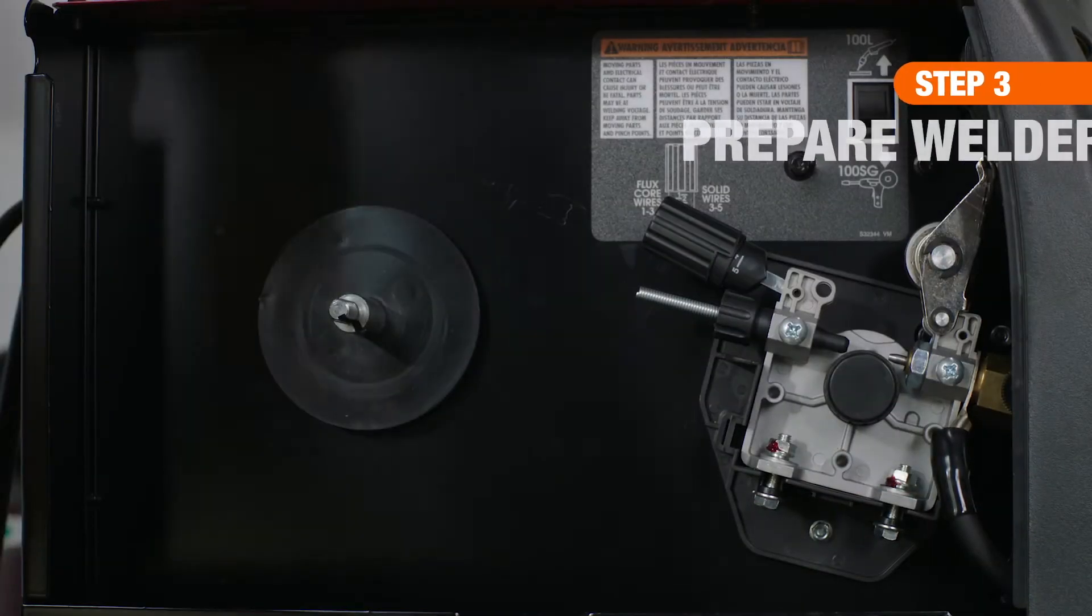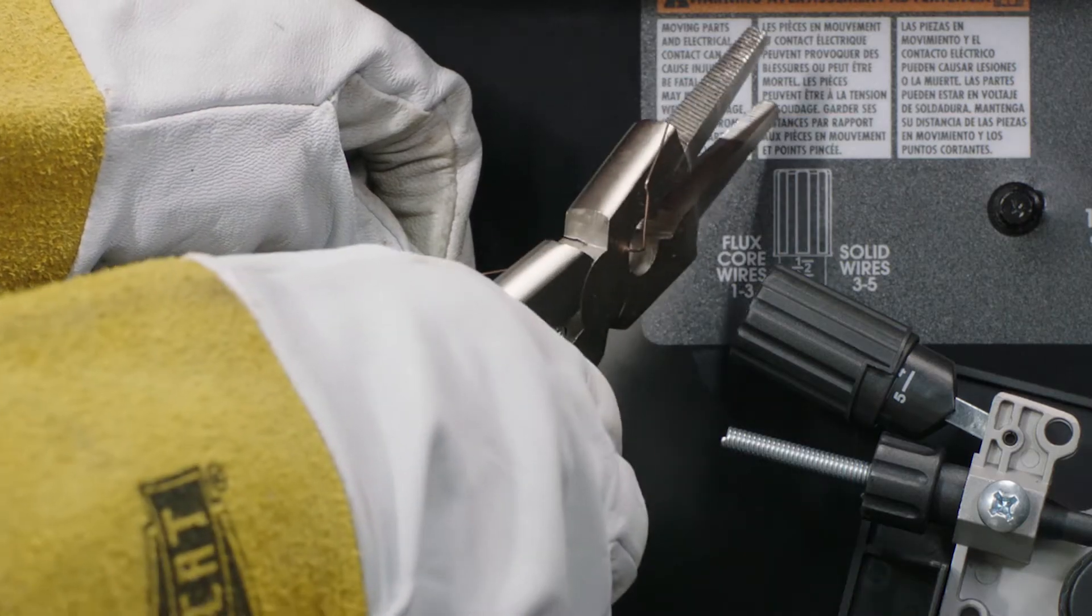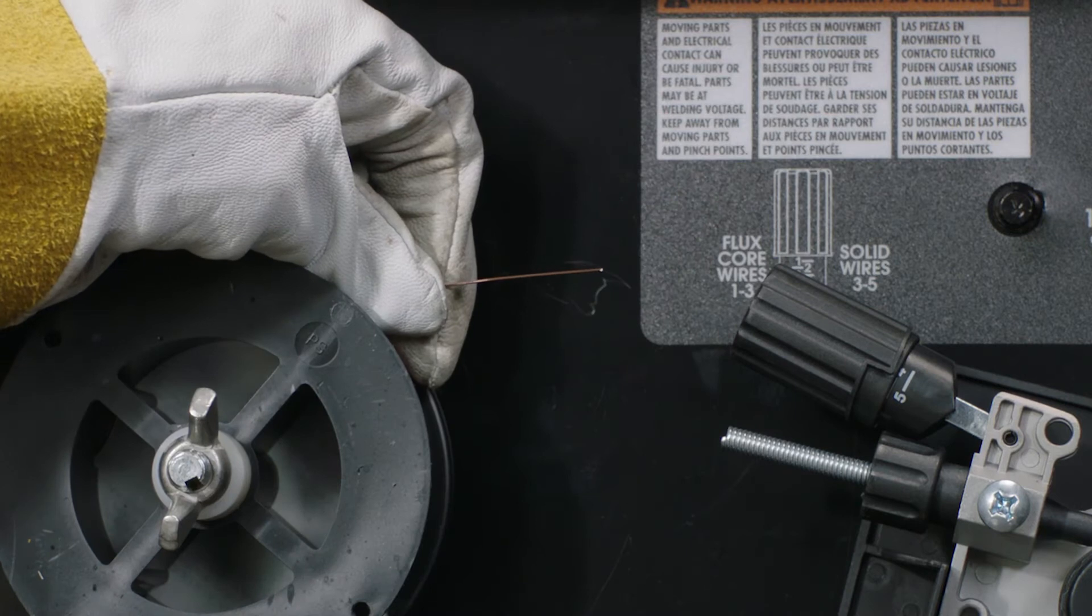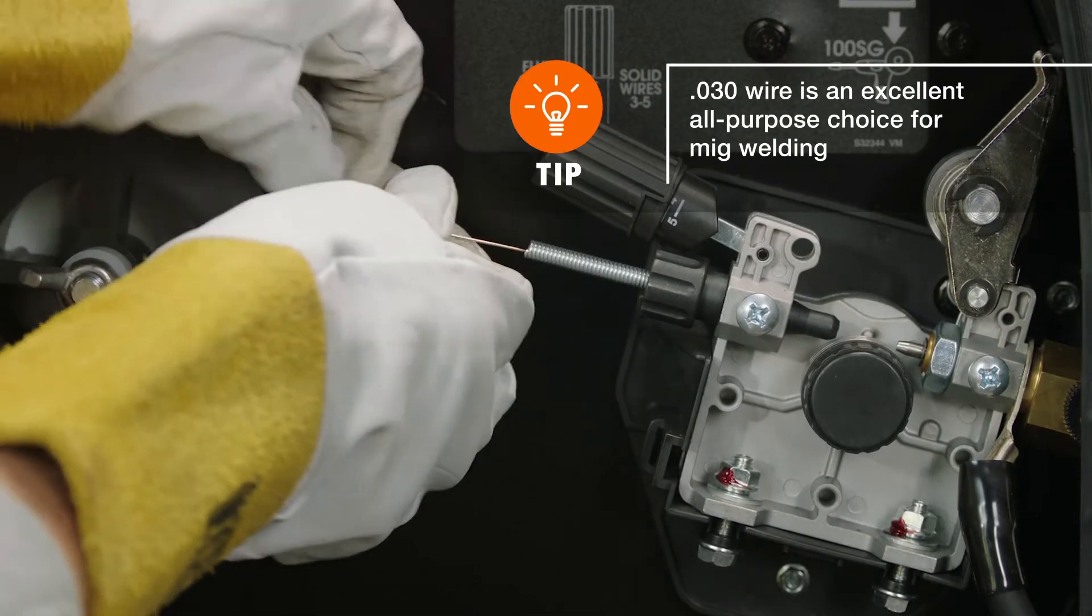To prepare the welder, with the power off, install the .030 wire spool into the machine. Securely holding the wire, clip the end to remove any excess or bent wire. Then insert the wire through the assembly and into the gun hose.